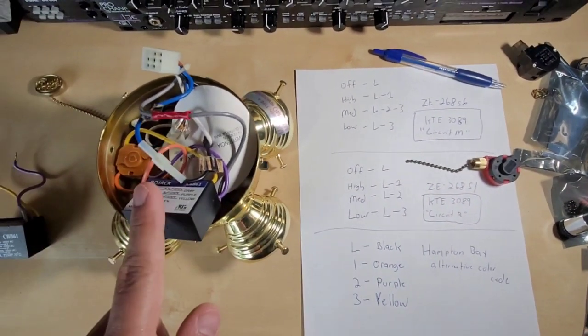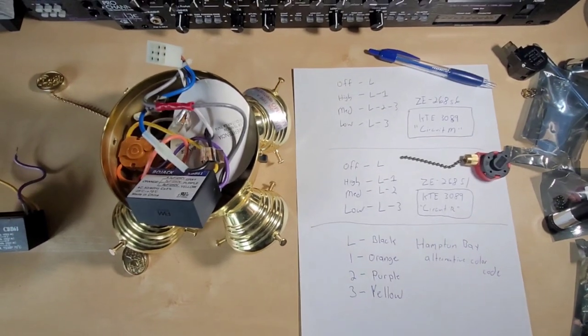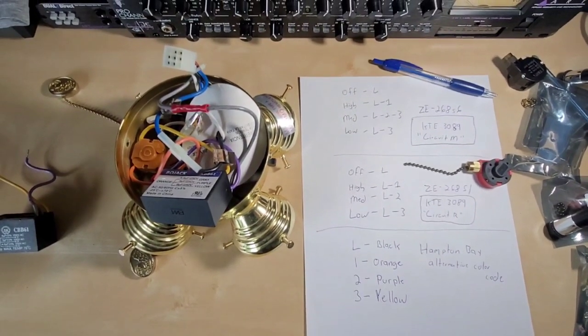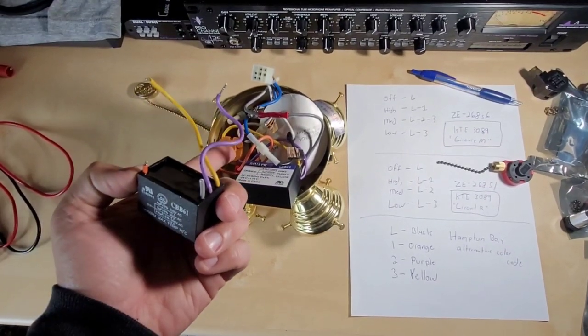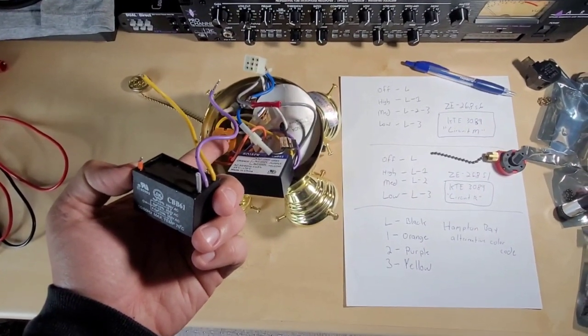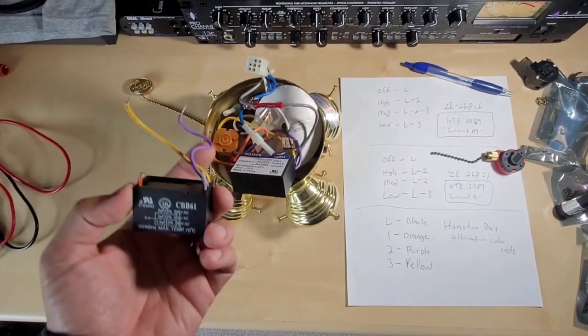That is the correct one for this Hampton Bay switch, but depending on your model it could be different. I'll link in the description for the replacement part for the capacitor and also the part number for an equivalent replacement of the pull chain switch.